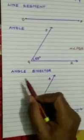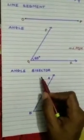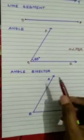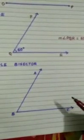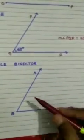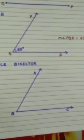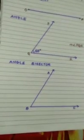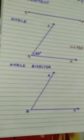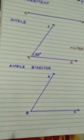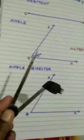Angle bisector. Now what is an angle bisector? An angle bisector divides an angle into two equal parts. So let us draw an angle bisector — for that we need a compass and pencil.